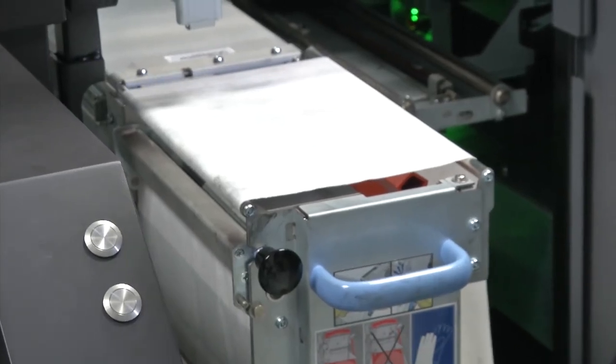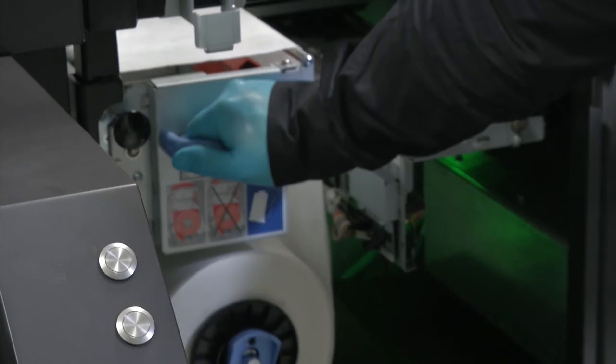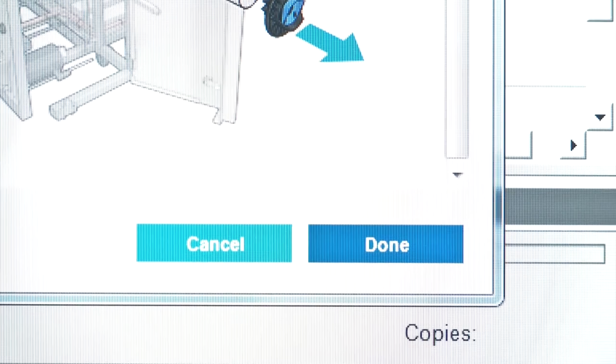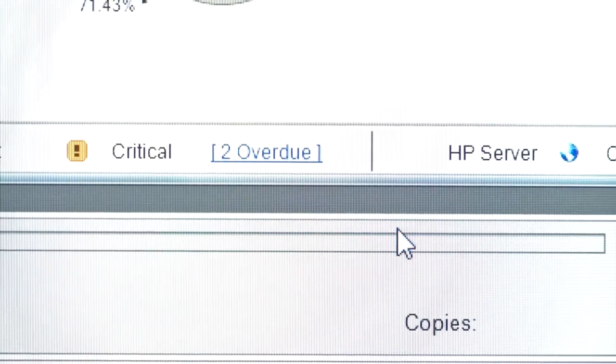Grip the handle and push the printhead cleaning roll assembly back into the printer. Make sure that you push it back as far as it will go. Click done on the internal print server wizard window.